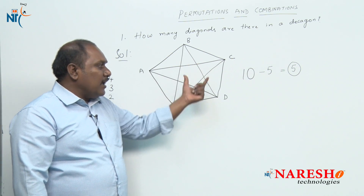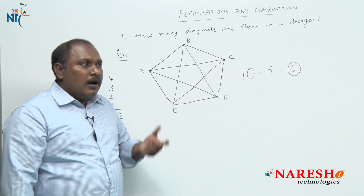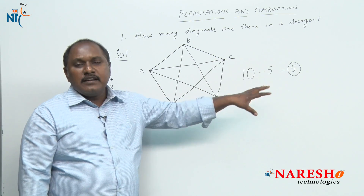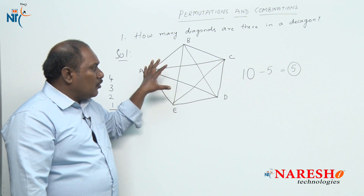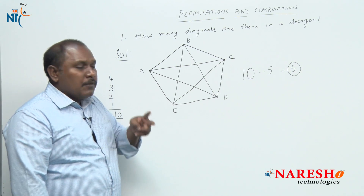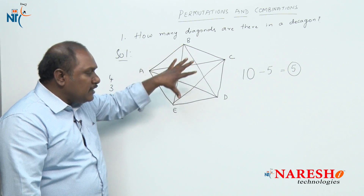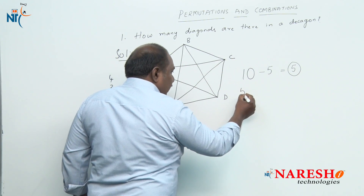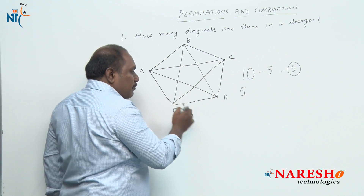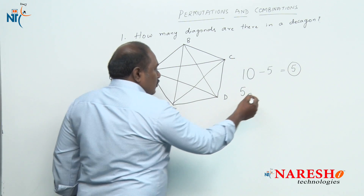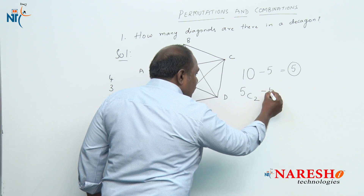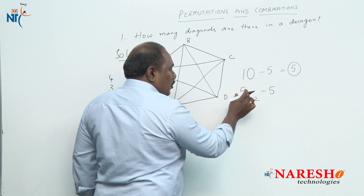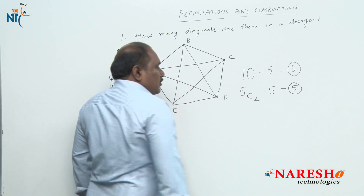But drawing this out for each polygon may consume a lot of time. How can we answer this directly? The logic is: from the total number of line segments, subtract the number of sides to get the number of diagonals. To draw a line segment we require two points, so we select any two points out of the five. The total number of line segments is 5C2. So the number of diagonals is 5C2 minus 5. Now 5C2 = 5×4÷2 = 10, so 10 minus 5 equals 5.